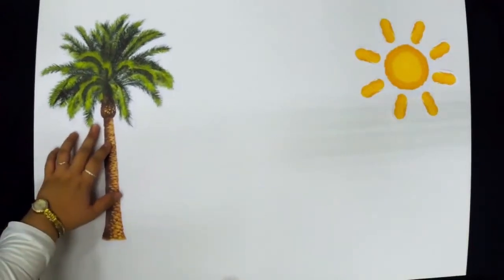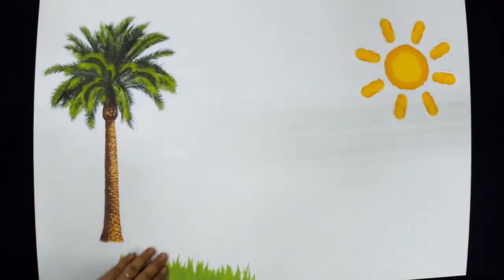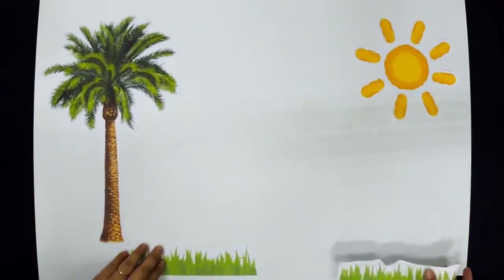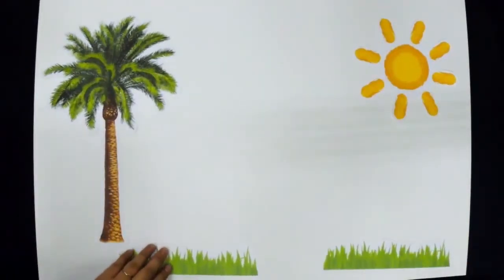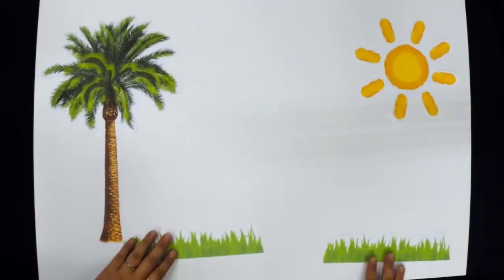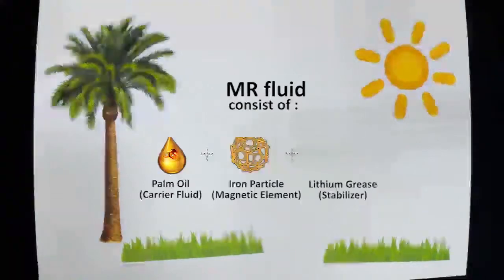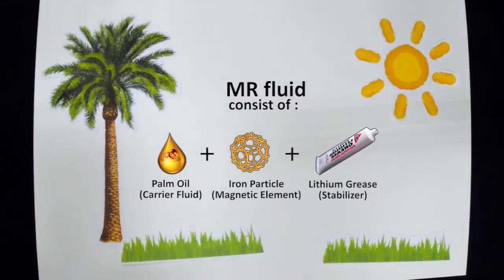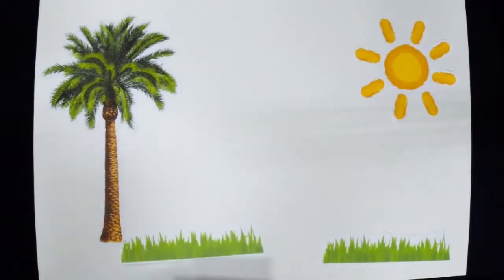MRF is a smart material. When a magnetic field is applied on it, the particle changes into solid state. The MRF mixture consists of carrier fluid, magnetic element, and stabilizer.